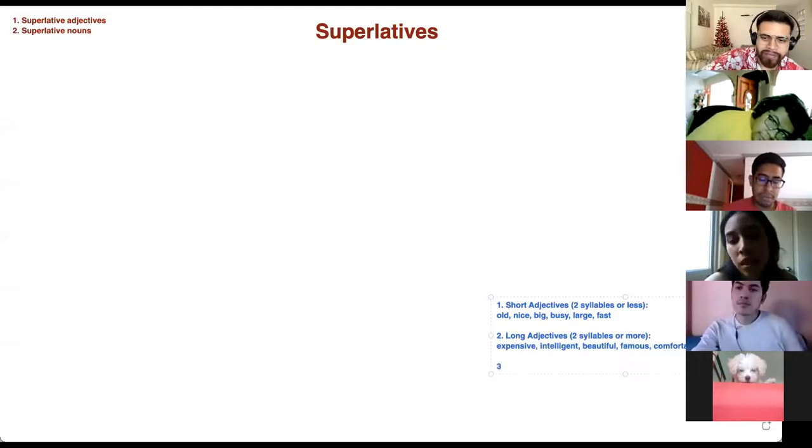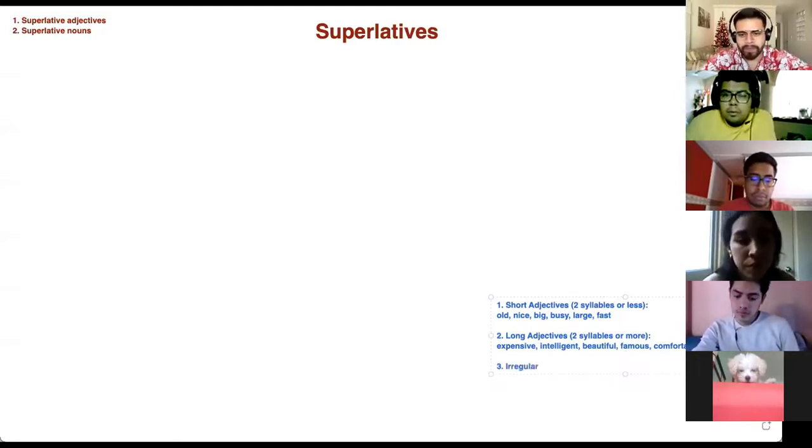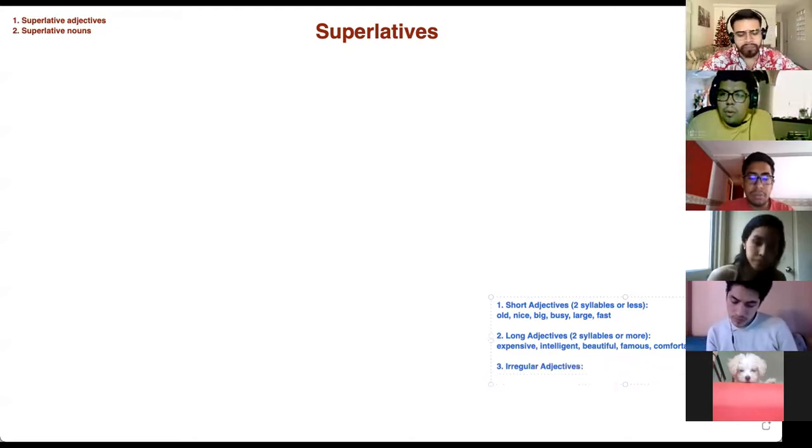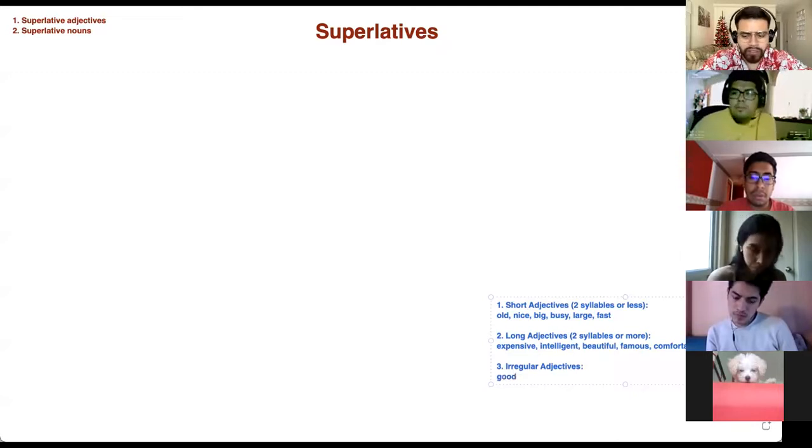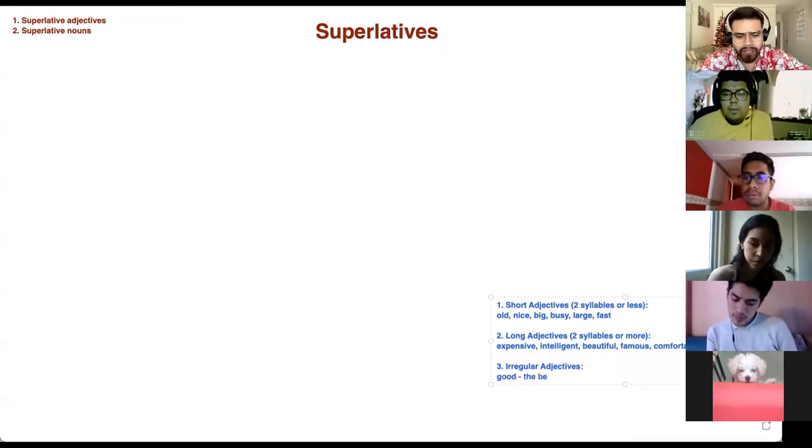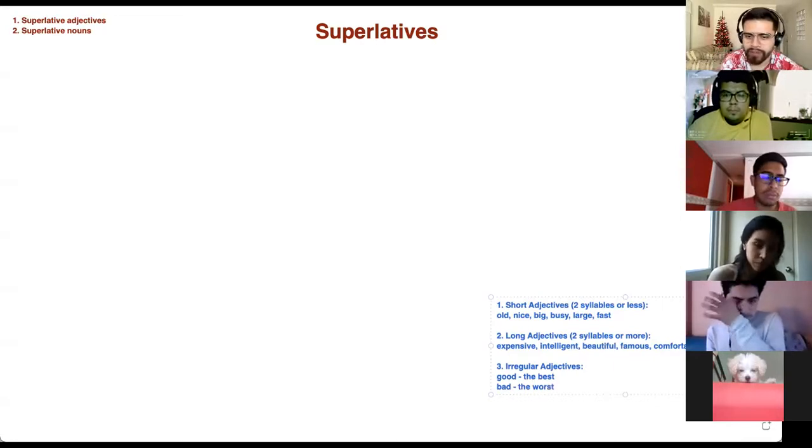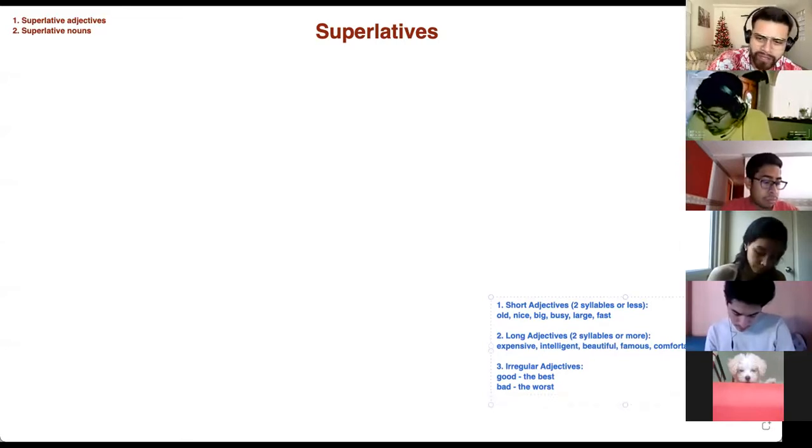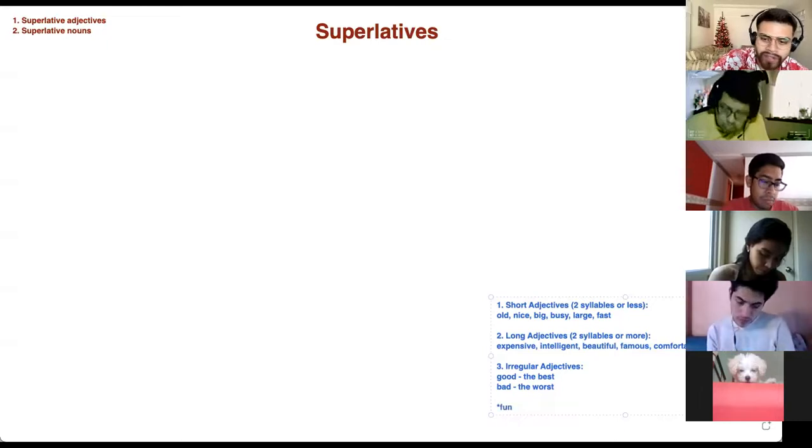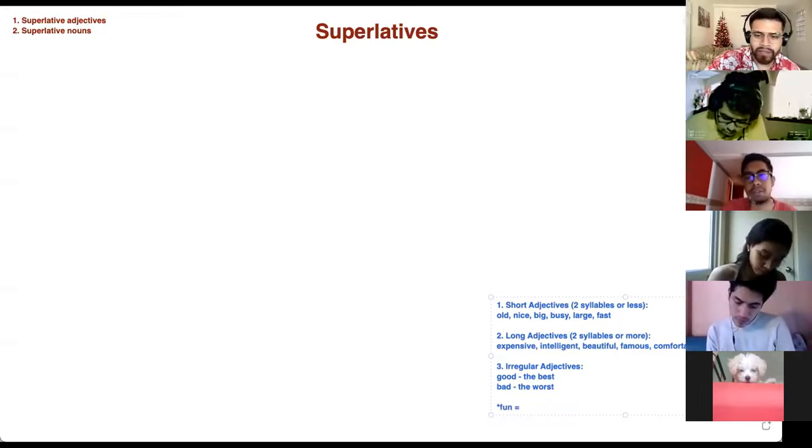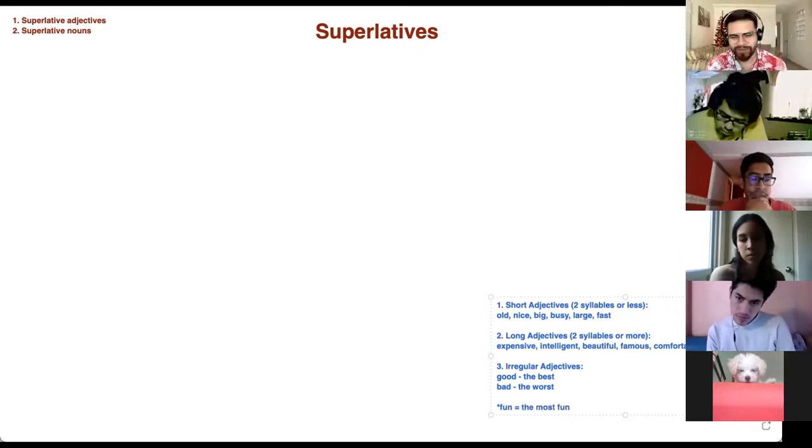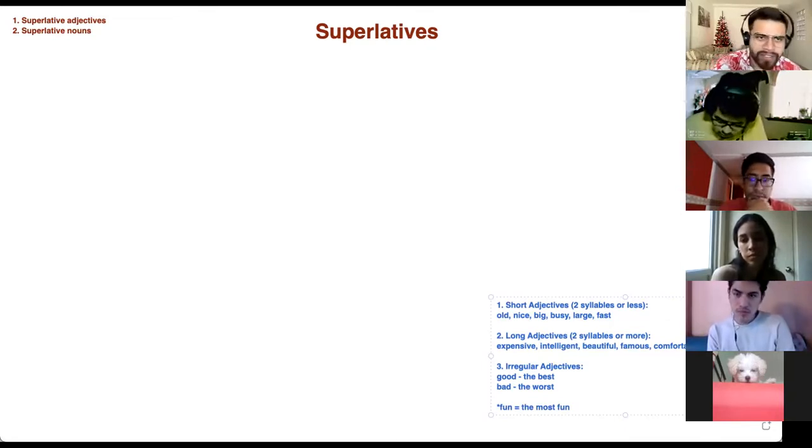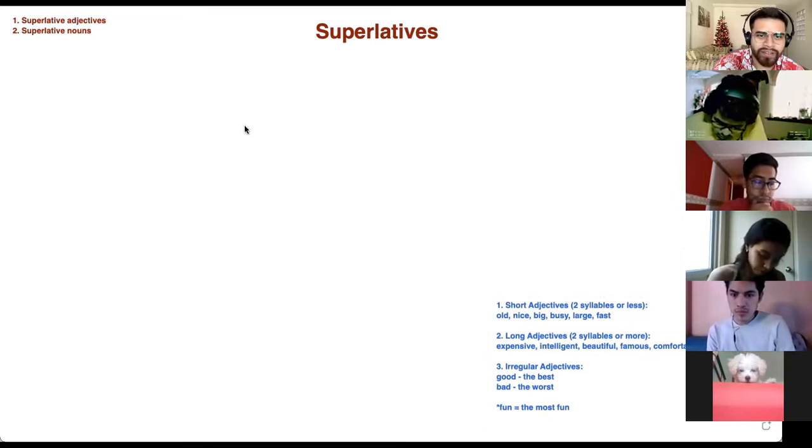And then we have irregular adjectives. And there are two. The irregular adjectives are good, and it turns into the best. And bad, it turns into the worst. Those are the two irregular adjectives that we are going to see today. And just like everything in English, there is an exception. Fun. It looks like a short adjective. The most fun. And I will explain what that means in a little bit.